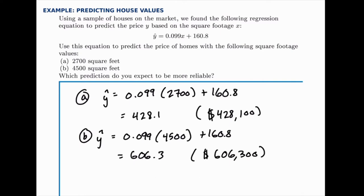Then the question asks, which prediction do you expect to be more reliable? Now for this, we'd really have to go back and look at the data, which we don't have in front of us. But if you go back in the textbook and look at the data, you'll notice that in the range of houses that we have data for, 2700 square feet falls within that range.